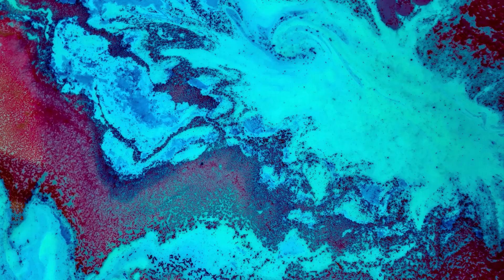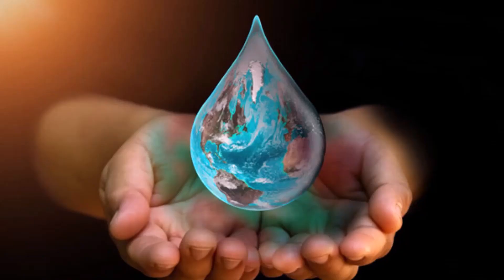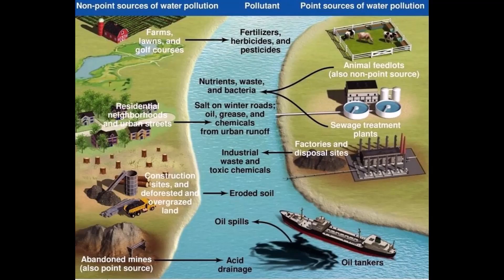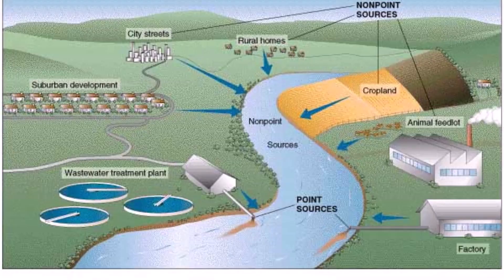The rise in water pollution and the resulting adverse impact it has on water quality is a burning issue, increasingly capturing the attention of concerned citizens, corporations and governments alike. Water can be contaminated by several pollutants. One way to categorize water pollution is based on its source. If the source of water pollution is easily identifiable — let's say a factory disposes of its effluents into the water body using a pipe — then it is called a point source of pollution.